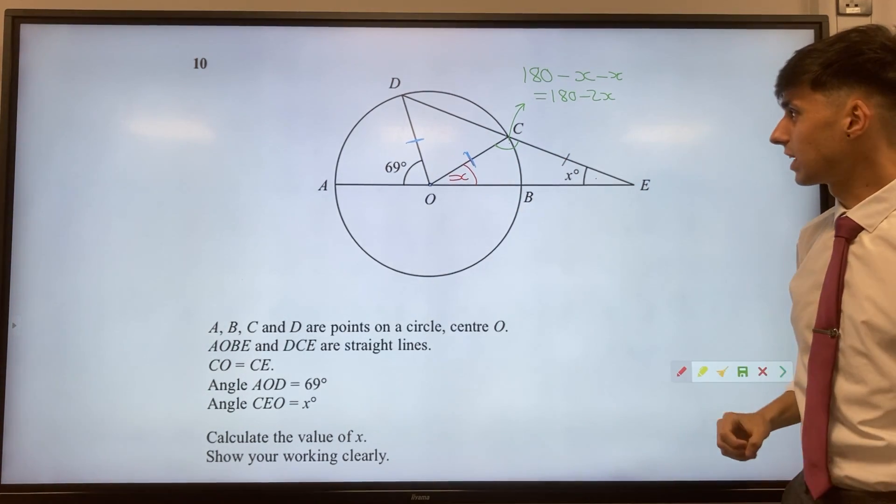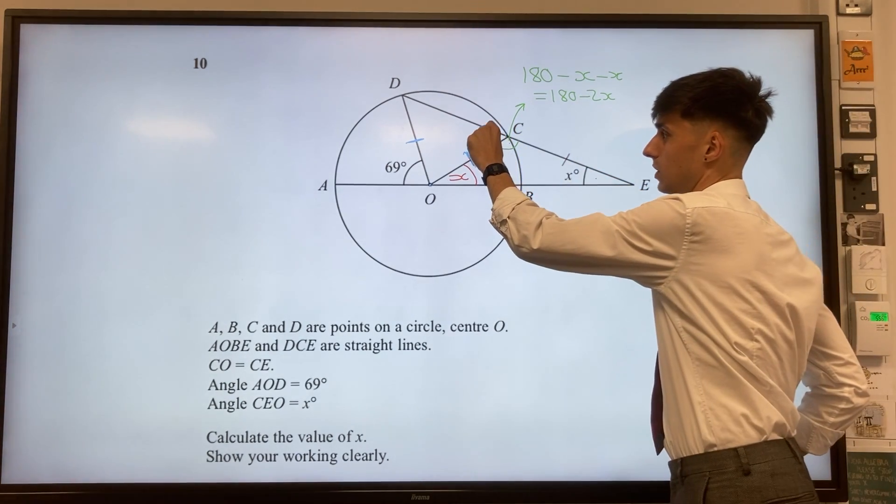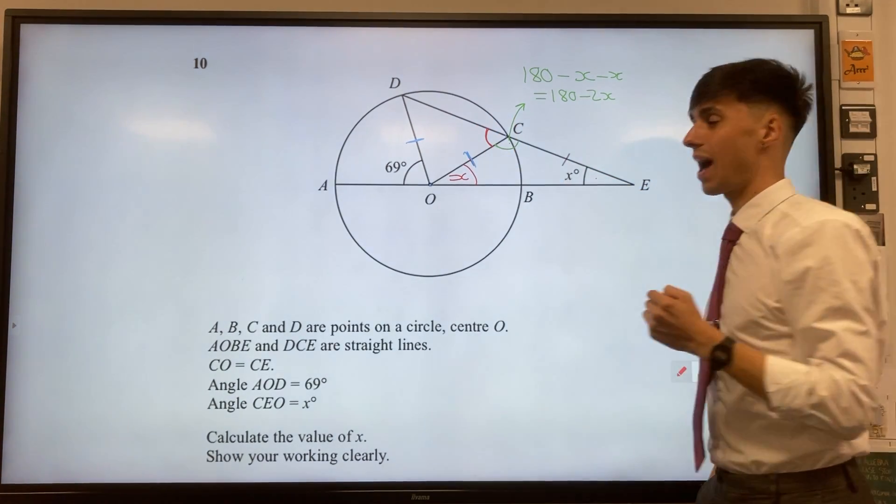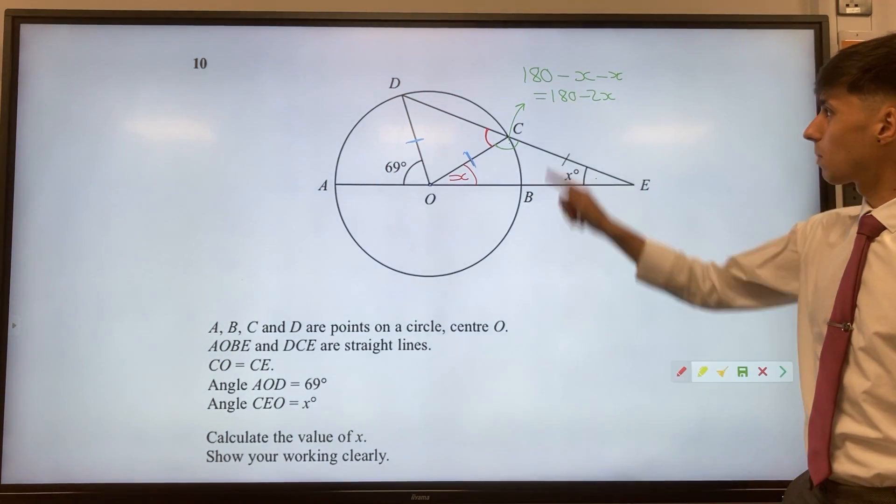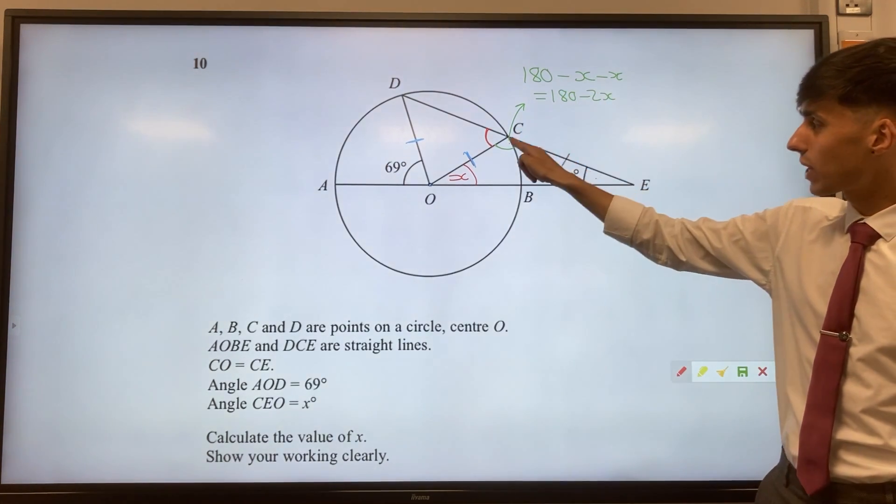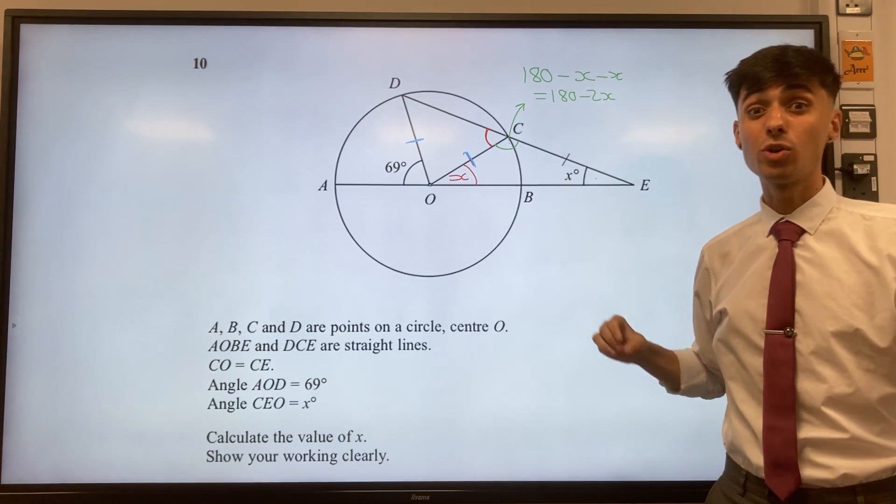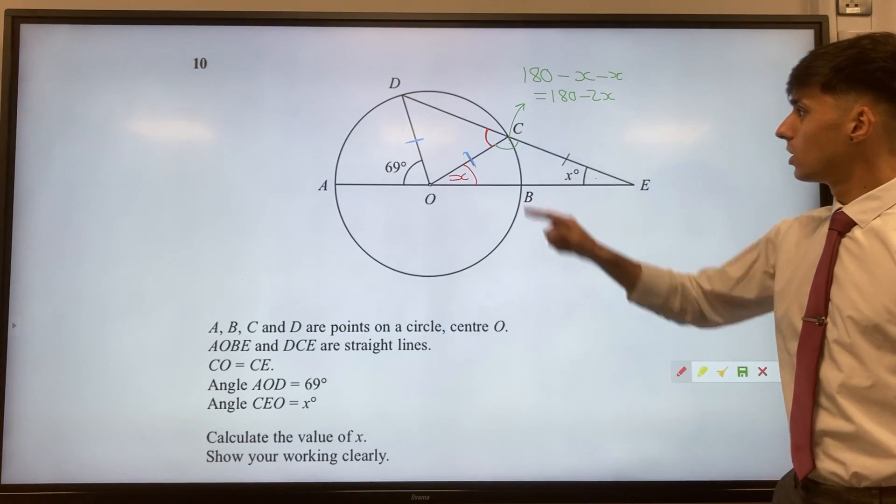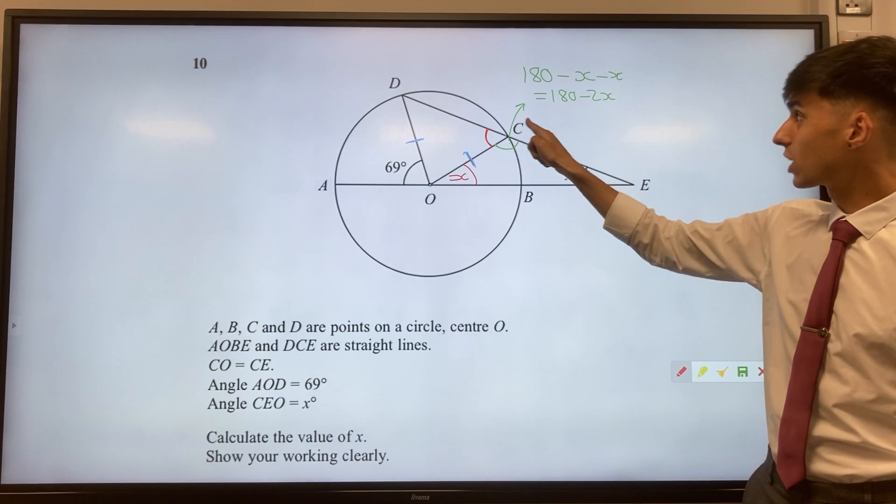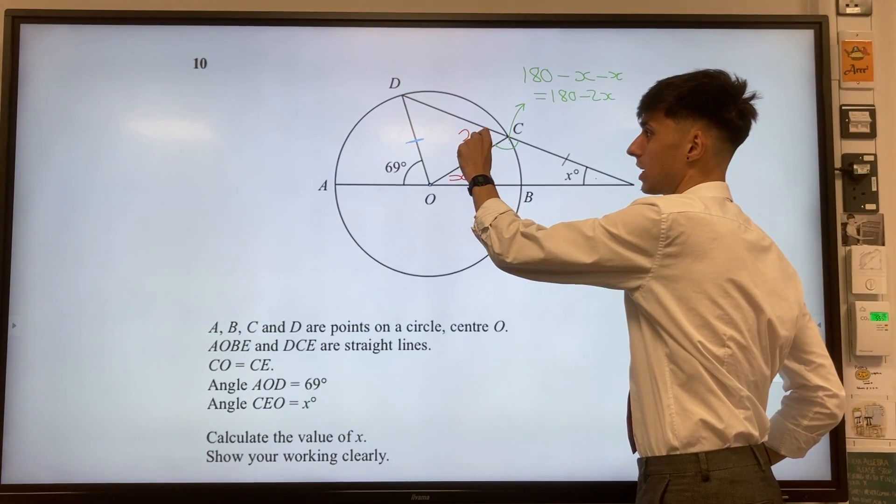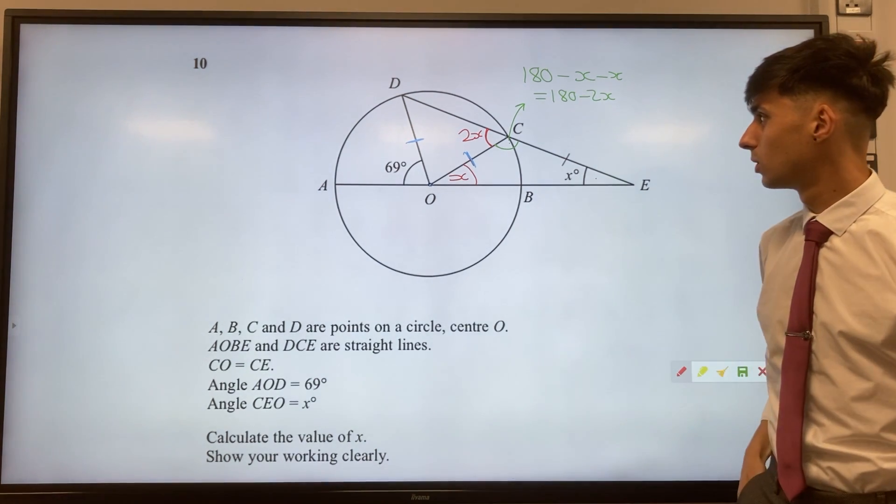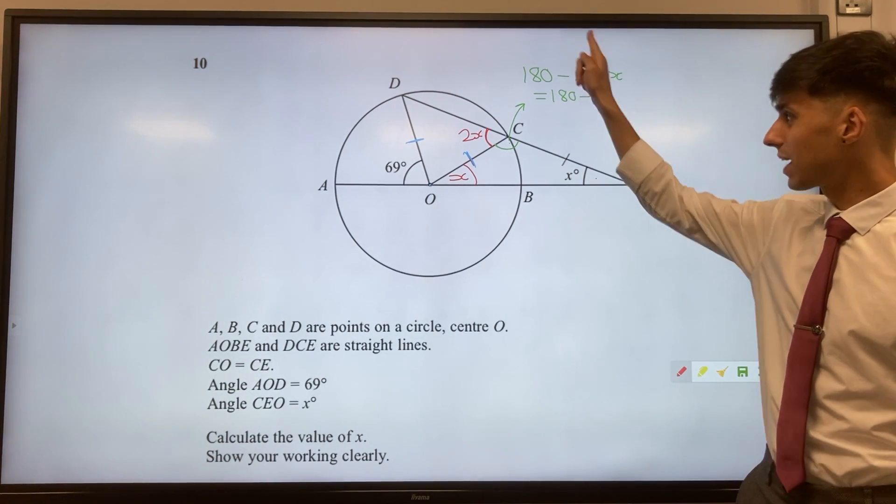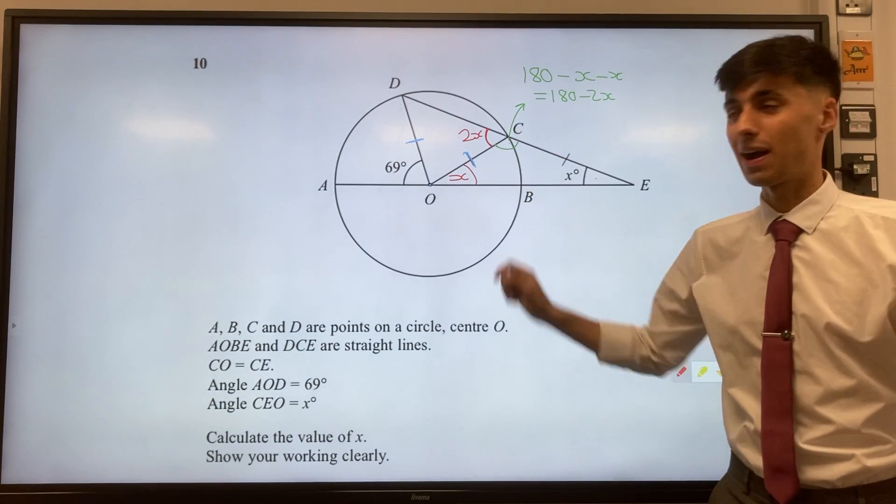Next step in our thinking, well if you know this angle, now we can reason about the other angle at C, and the way that we do that is by thinking well angles on a straight line must add up to 180 together. So if this is 180 take away 2x, well this angle here, the red one, must therefore be 2x, because 180 take away 2x plus 2x gets you back to your 180.